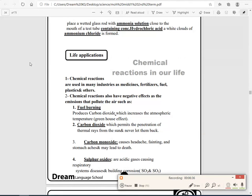Now we have some life applications on chemical reactions in our life. You have to know that the chemical reactions are used in many industries, as medicine, fertilizer, fuel, plastic, and others. Chemical reactions also have negative effects, as the emissions that pollute the air, such as fuel burning. Fuel burning produces carbon dioxide, which increases the earth's atmosphere, which makes the greenhouse effect.